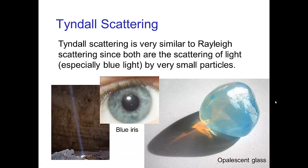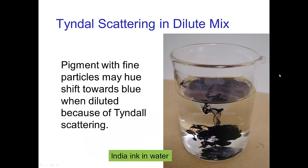A very similar type of scattering is called Tyndall scattering. Again, this is scattering by very small particles, and so it is bluish. We see that in some materials like opalescent glass. The blue iris is actually a result of Tyndall scattering by very small particles — there isn't a blue pigment, it's Tyndall scattering. Tyndall blue is the characteristic color resulting from this scattering. We also see this in a very dilute mixture of fine particles; India ink has a bluish tint when diluted, even though at higher concentration it's black from absorption.